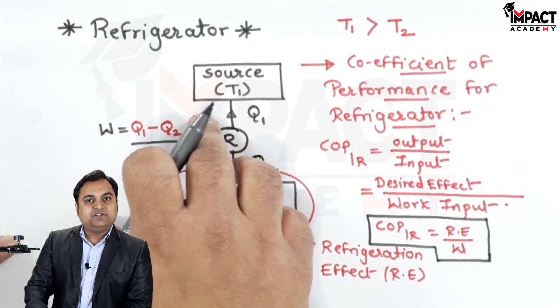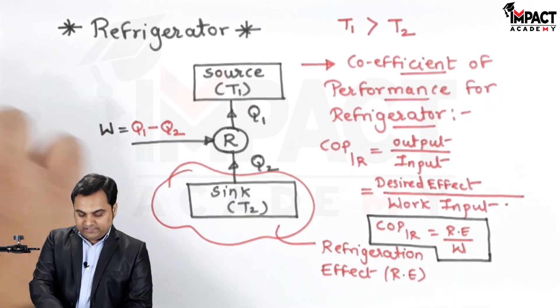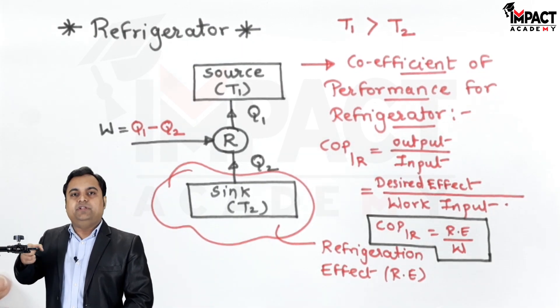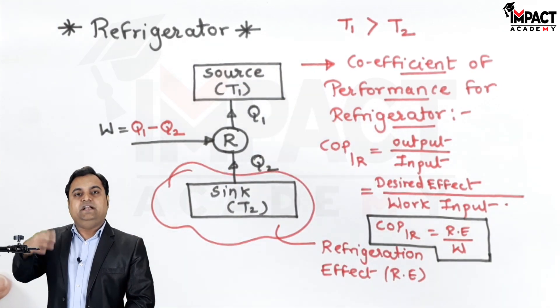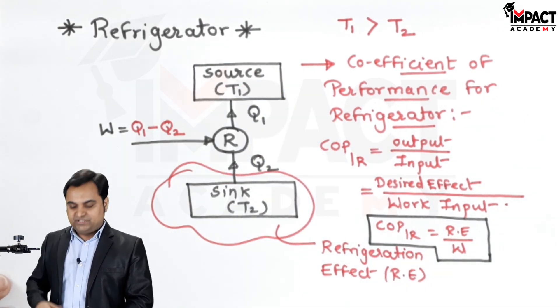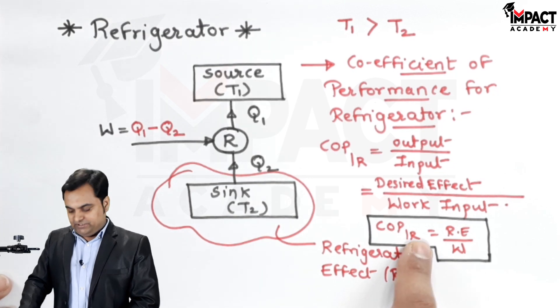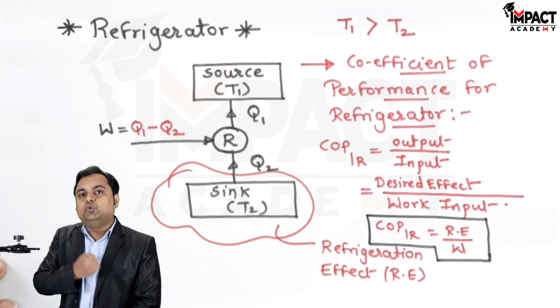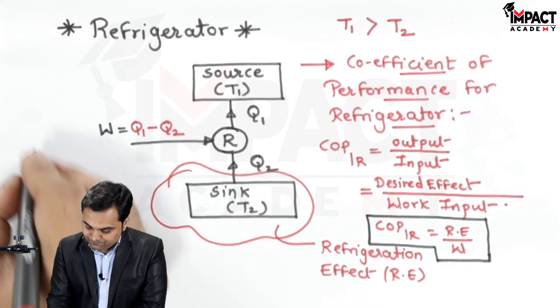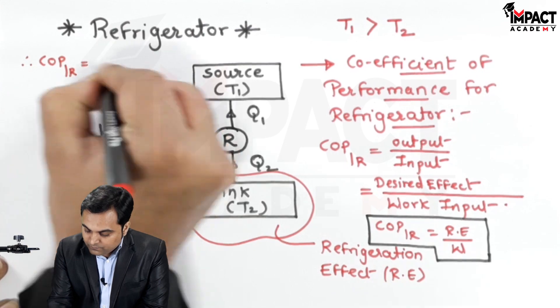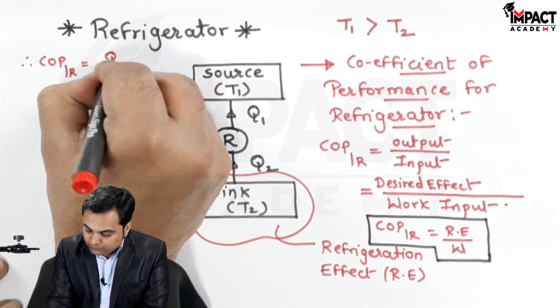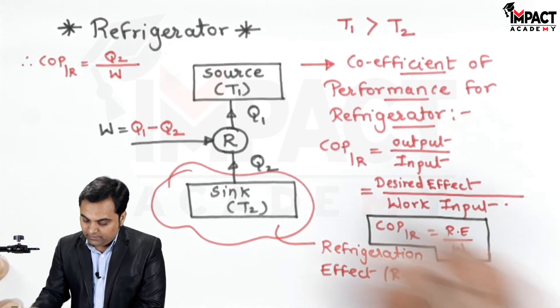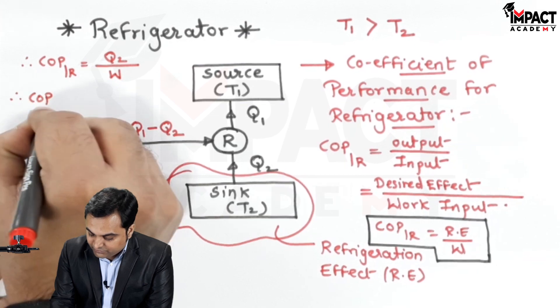The high temperature reservoir or source is the atmosphere, and sink is the room in which there is the refrigerator or an AC. When I write the COP of the refrigerator, the refrigeration effect is felt into the sink and it is taking heat Q2 from the sink. So COP will become Q2 upon work input W. Therefore COP of the refrigerator will be Q2 upon W, where W is Q1 minus Q2.